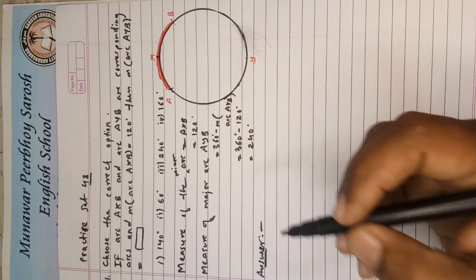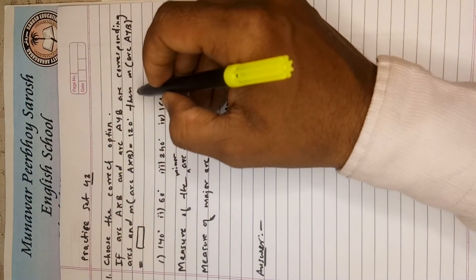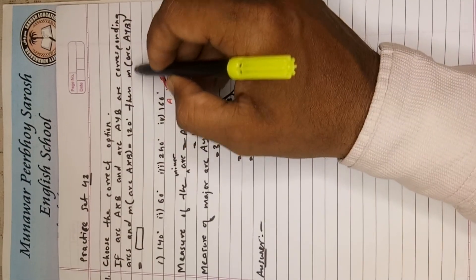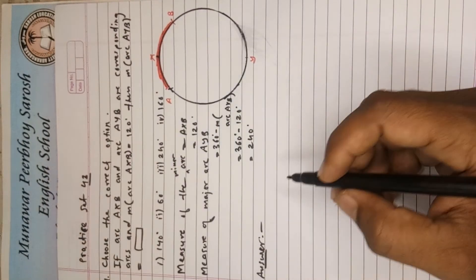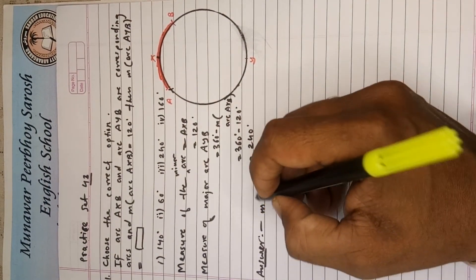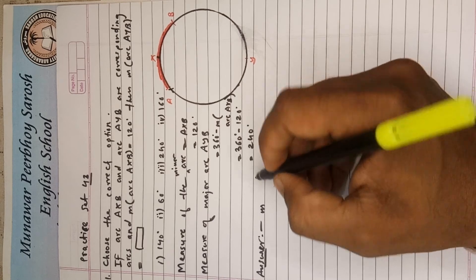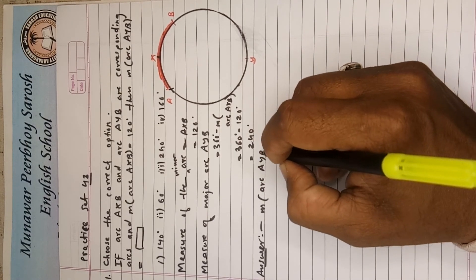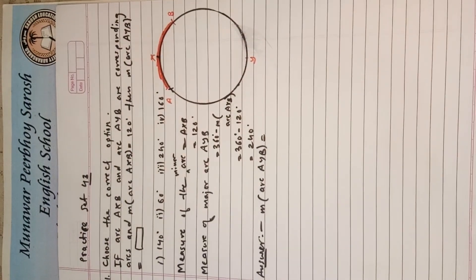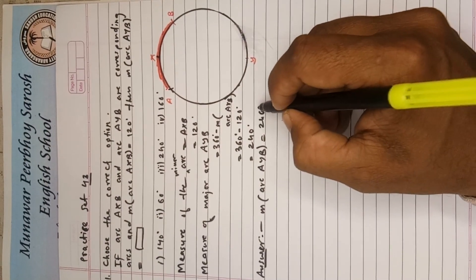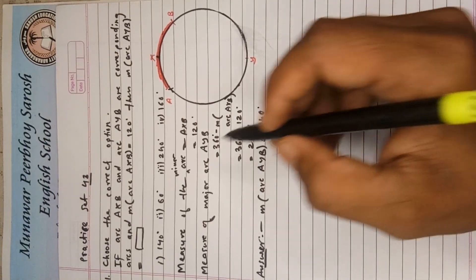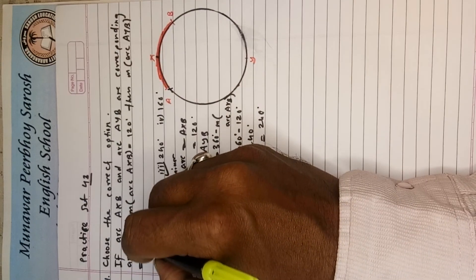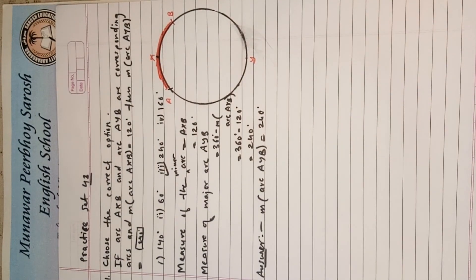At last you have to read the answer. What they asked in the question? Then measurement of arc is equals to how much? So simply write here: measurement of arc AYB is equals to 240 degree. And here so we can tick. Write here answer: 240. Okay students.